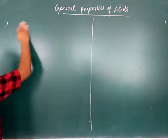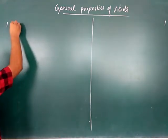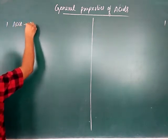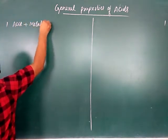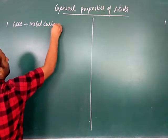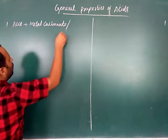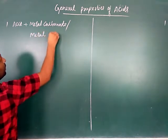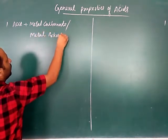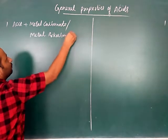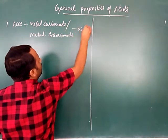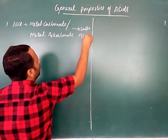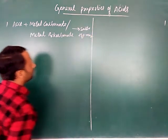So, the next property is that when an acid reacts with metal carbonate or with metal bicarbonate, it will form salt plus water plus carbon dioxide.